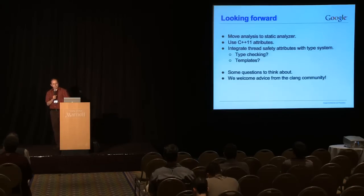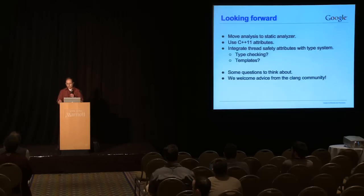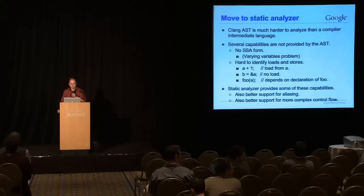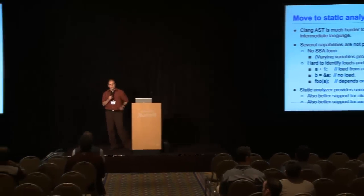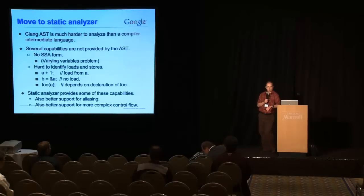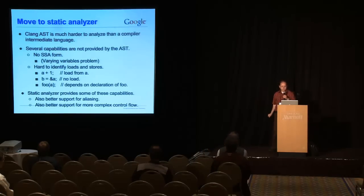So we're thinking, haven't decided yet, we're thinking about moving analysis to the static analyzer. We'd like to move away from using GCC attributes and switch to C++11 attributes. And we'd like to better integrate the thread safety attributes with the type system, which introduces type checking and template problems. These are questions I'd like to think about, so if anybody wants to contact me later or has good advice for me, I would love to hear from you. Please send me an email. Nick is pointing at someone who needs to give me advice. As I mentioned, the Clang AST is much harder to analyze than a compiler intermediate language. The LLVM IR would be a lot easier in some respects, except for the fact that we then back be in the place that we are with the GCC implementation.